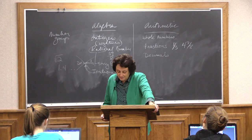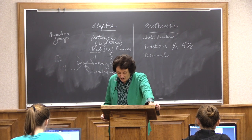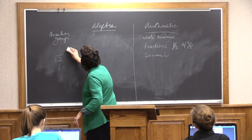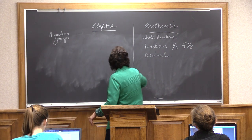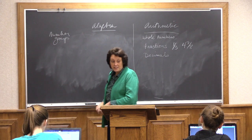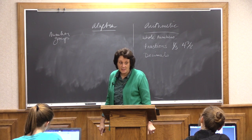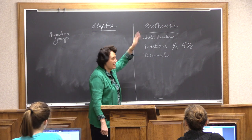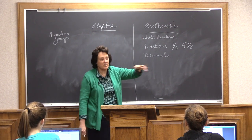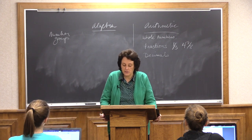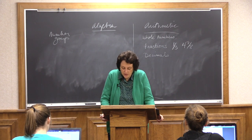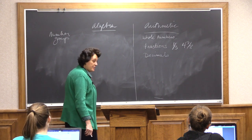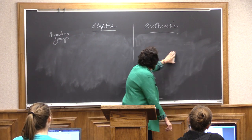Our number groups are much different and expanded in algebra. In arithmetic we learn whole numbers, operations on fractions, and decimals. In algebra, we work with different number groups based on the number line — integers, rational numbers, irrational numbers. The number line becomes much more important, and we'll talk about that later.